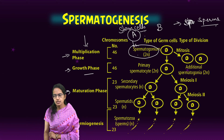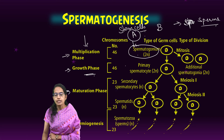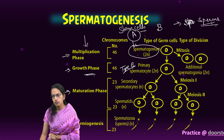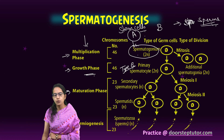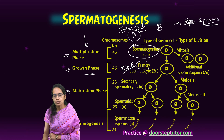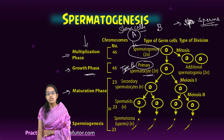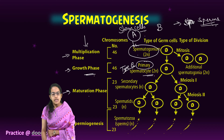Then starts the growth phase. Here, type B cells which are meant for the formation of sperms actively grow, and a large primary spermatocyte is produced along with nourishment from the Sertoli cells.